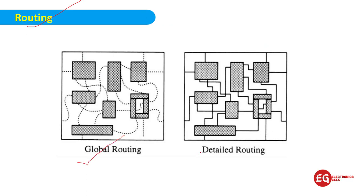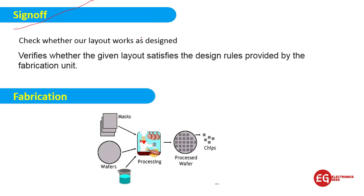The next one is routing. In the routing part, we will connect the transistors. There are two types of routing: global routing and detailed routing. You can see the global routing and the detailed routing.